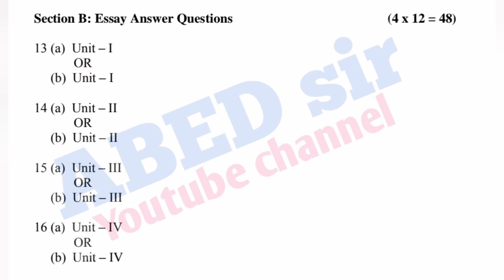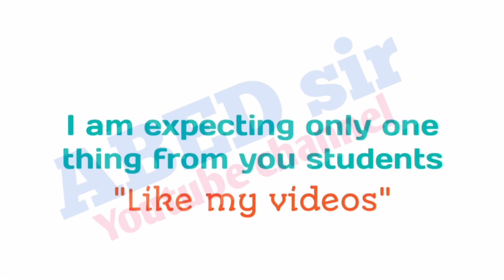In Part B, mutual choice questions are there. Total four questions will be asked. You have to answer all four questions and each one carries 12 marks. So four 12s are 48 marks you will get from Part B. Total, an 80-mark paper is there for the semester exam. I hope you understand.